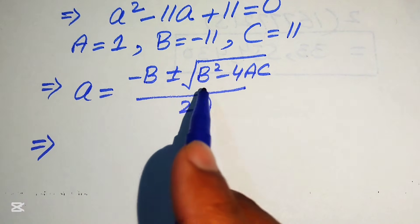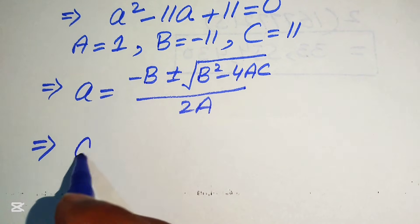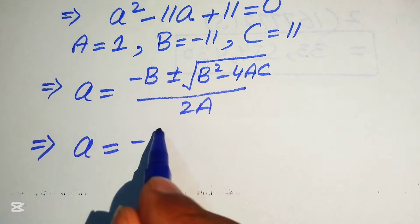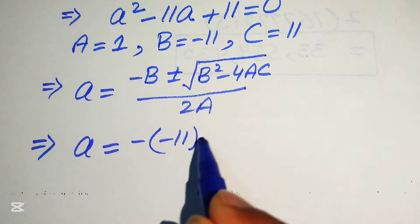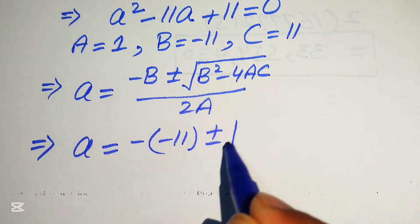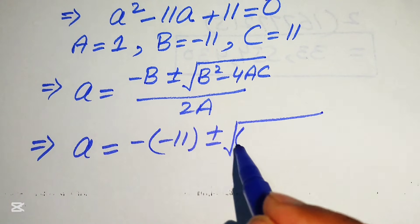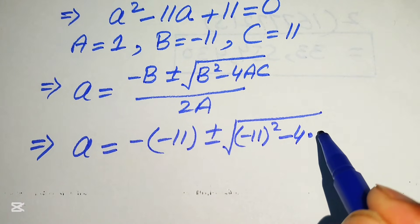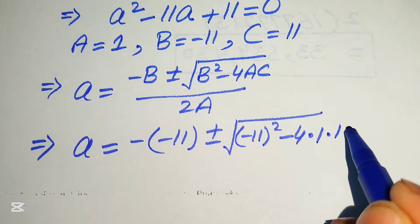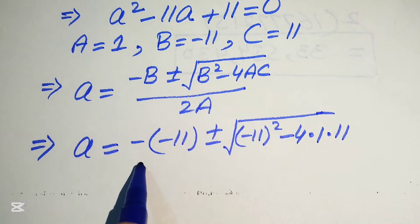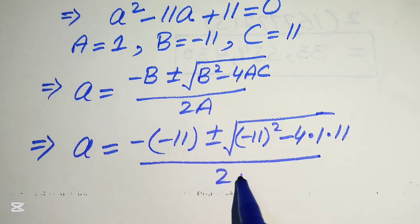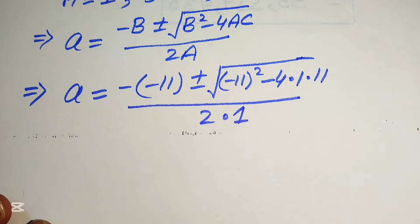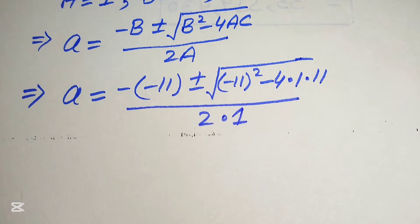Now we substitute the values of A, B, and C into this formula. It will be written as: a equals to minus B — the value of B is minus 11 — plus or minus square root of B squared, which is minus 11 squared, minus 4 times A which is 1, times C which is also 11, divided by 2 times A which is also 1.